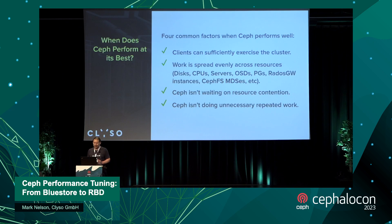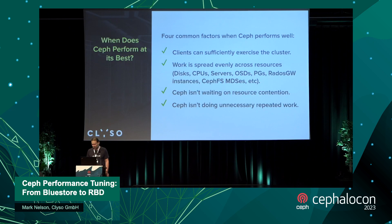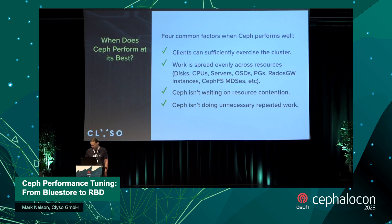When I made this slide, I was trying to think about when does Ceph perform its best. I came up with four points — not always universal, but trends I tend to see. First, clients have to be actually exercising the cluster sufficiently. Second, work needs to be spread evenly across the resources in your cluster. Third, Ceph isn't waiting on resource contention. And fourth, we have cases where we do unnecessary repeated work. I'll talk about examples of all of these.